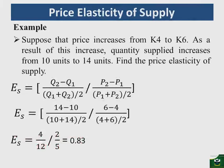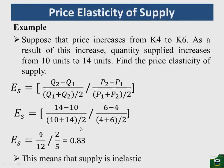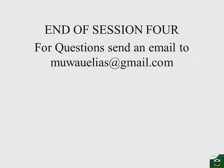Let's take an example. Suppose price increases from 4 to 6 and as a result quantity supplied increases from 10 to 14. You are required to find the price elasticity of supply. Using the midpoint formula, you end up with 0.83. Since the elasticity is 0.83 — less than one — supply is inelastic. Since all values here are positive, the absolute value is also positive. Thank you very much for watching. If you have questions please send an email to muawalias@gmail.com. Bye bye.